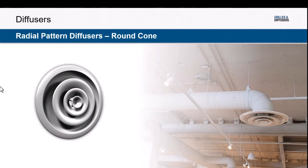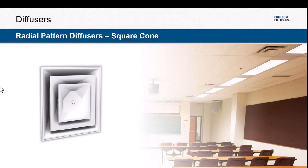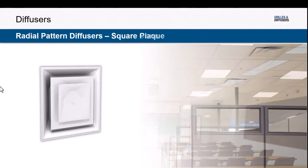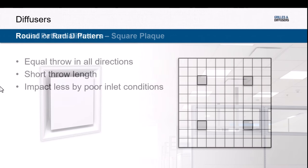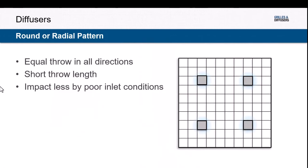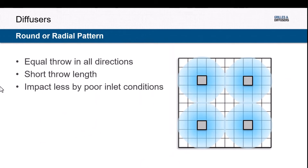Looking at radial pattern diffusers — whether a round cone, square cone, or square plaque diffuser, all quite common air outlet types — these all have radial patterns that move equally out away from the diffuser in all directions. Because the air moves in all directions, throw length is typically shorter. A nice feature of these radial pattern diffusers is they are typically impacted less by poor inlet conditions.